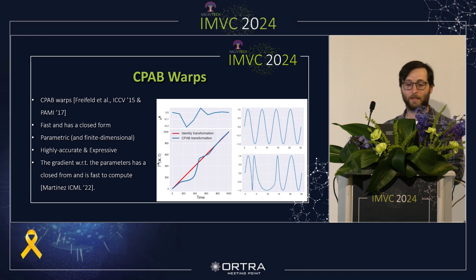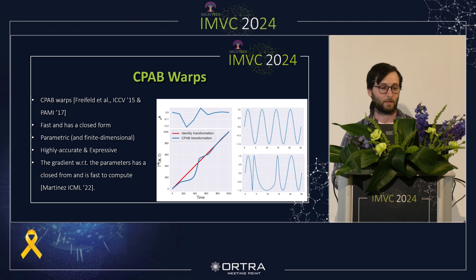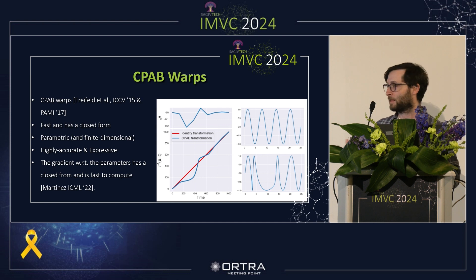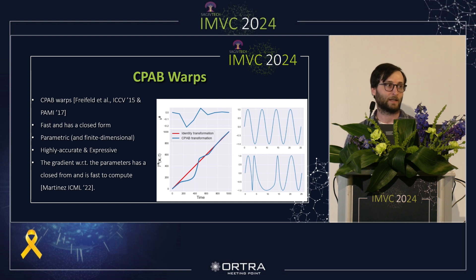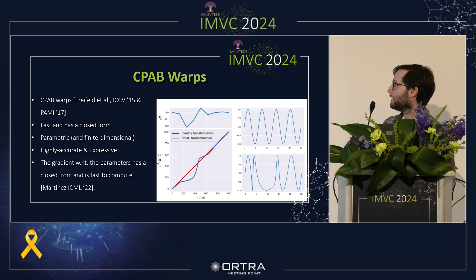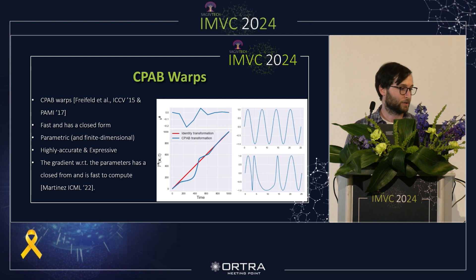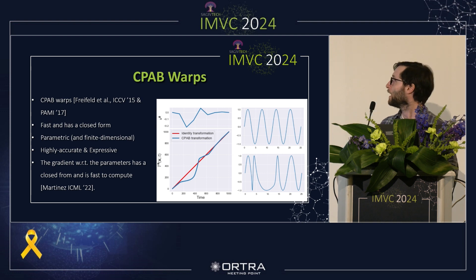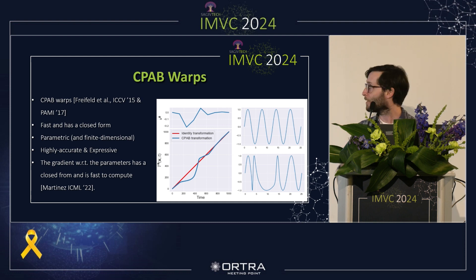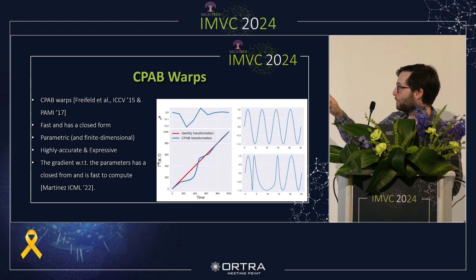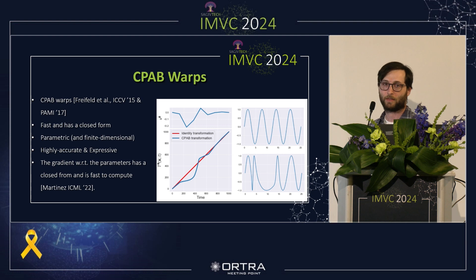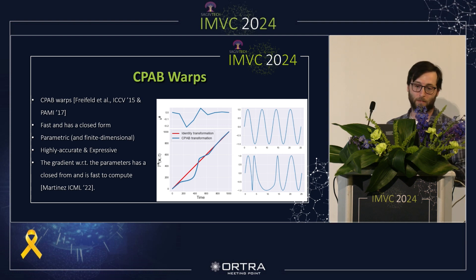The warping family we use in this project is called CPAP — a continuous piecewise affine-based transformation. It is parametric, so you predict a fixed number of parameters regardless of the length of the time series, similar to how an affine transformation for images always predicts six parameters. It also has a closed-form gradient, which is very convenient for deep learning frameworks. As shown in the illustration, we have a sine wave with a random warp. When the blue line is below the identity (red line), the signal is stretched back in time; when it's above, it moves forward.